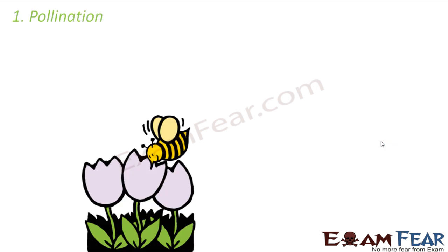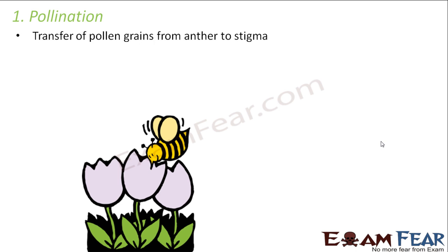We will start with pollination. The word pollination appears to have been derived from the word pollen. So what is pollination? It is the transfer of pollen grains from the anther to the stigma.